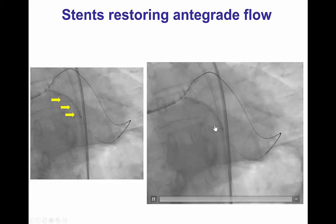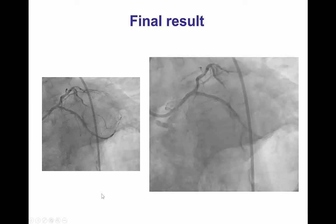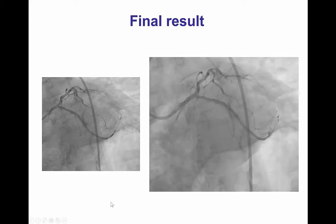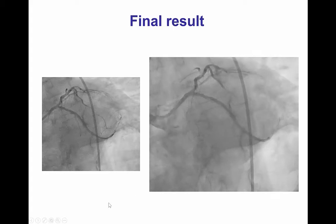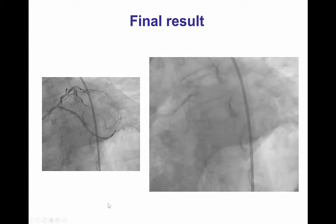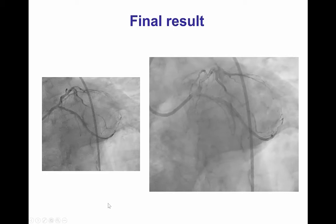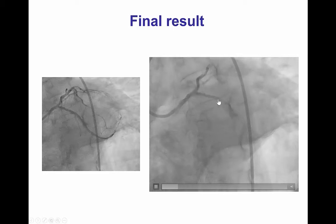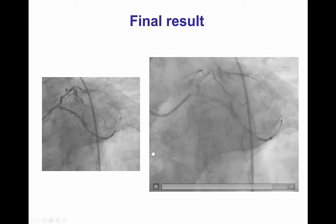After doing this, we were able to balloon and stent the circumflex and then successfully recanalize the circumflex and the second obtuse marginal. The patient did well. He did have chest discomfort during the procedure and some biomarker elevation, partially related probably to the occlusion of another obtuse marginal branch.